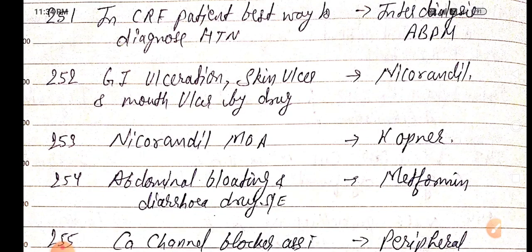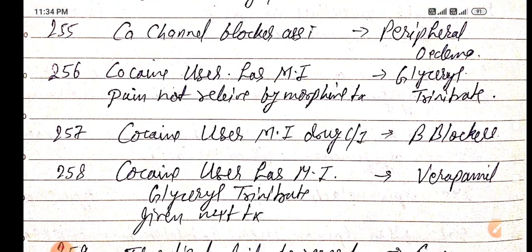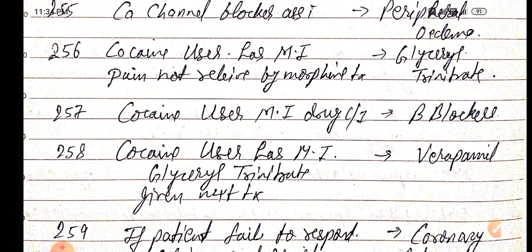Recap: In CRF patients, best way to diagnose hypertension is interdialytic ambulatory blood pressure monitoring. GI ulceration, skin ulcer, and mouth ulcer are caused by Nicorandil, which is a potassium channel opener. Metformin causes abdominal bloating and diarrhea. Calcium channel blockers are associated with peripheral edema. Cocaine user MI — pain not relieved by morphine, treatment is glyceryl trinitrate.